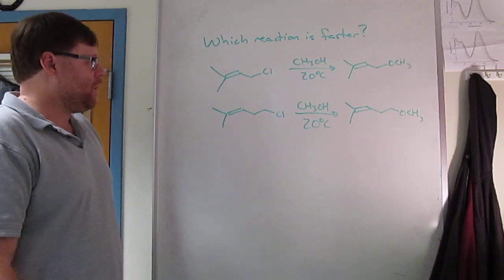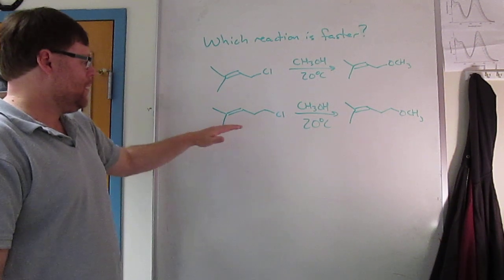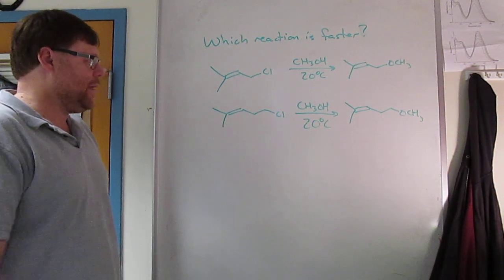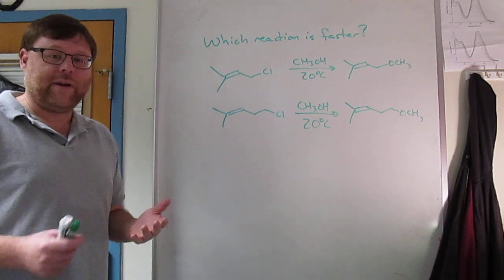It's stirred in methanol at 20 degrees and gives you a methyl ether. In the bottom reaction I have an alkyl chloride stirred in methanol at 20 degrees, gives you a methyl ether. So the trick to figuring out these problems is figuring out what the difference is.